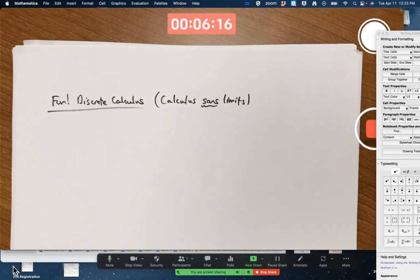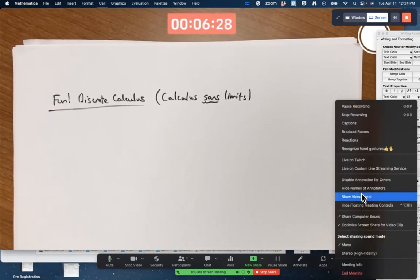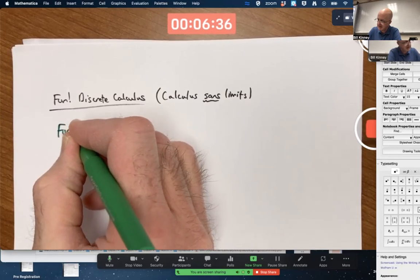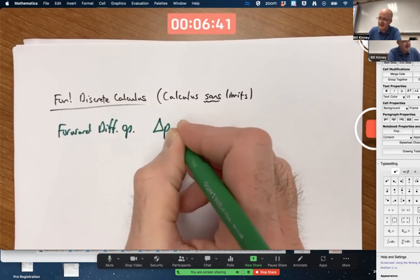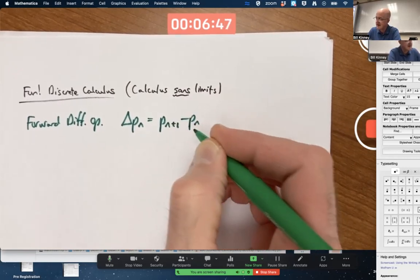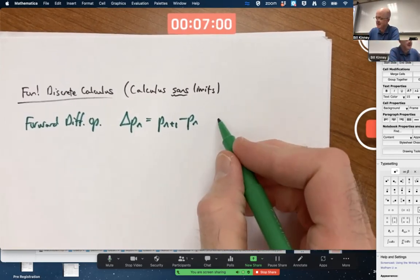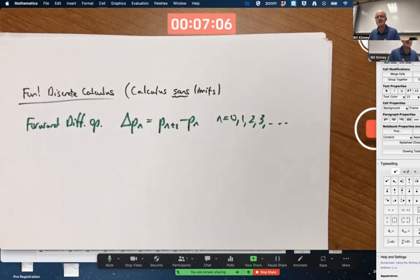And we did talk about both the forward difference operator and the backward difference operator last week. And I want to mostly focus today on the forward difference operator. Delta of P_N is P_(N+1) minus P_N. You define this for N equals 0, 1, 2, 3, etc., when our original sequence P_N is defined starting with N equals 0.